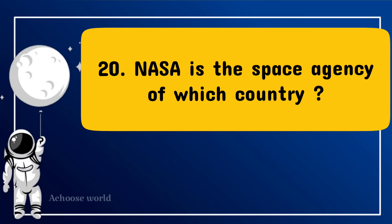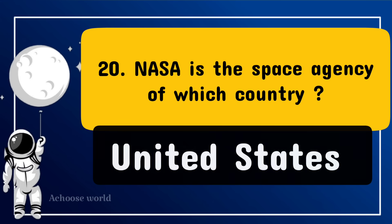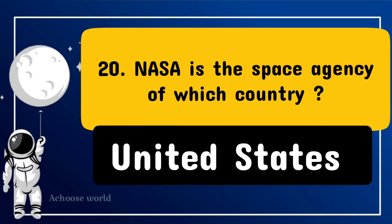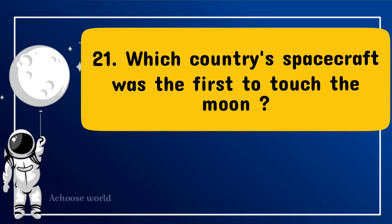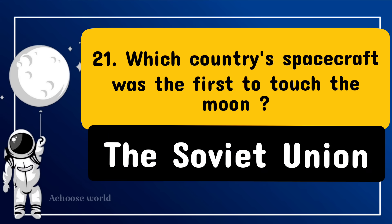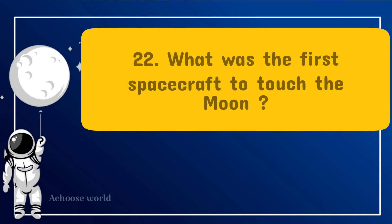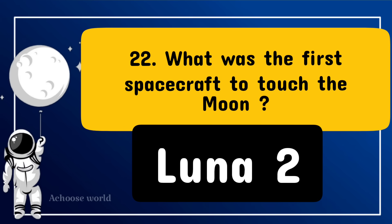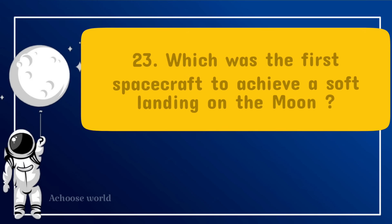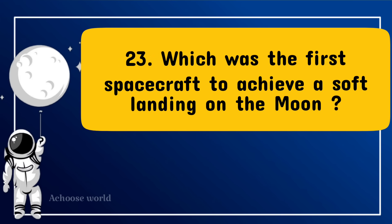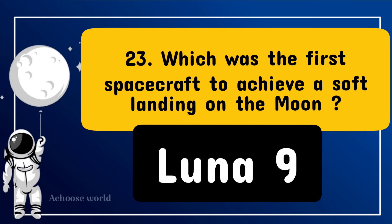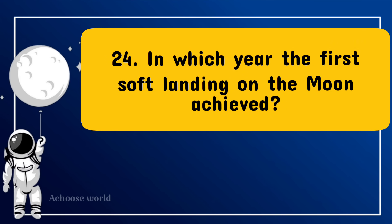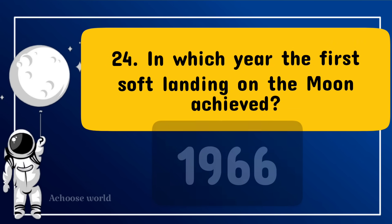NASA is the space agency of which country? United States. Which country's spacecraft was the first to touch the Moon? The Soviet Union. What was the first spacecraft to touch the Moon? Luna 2. Which was the first spacecraft to achieve a soft landing on the Moon? Luna 9. In which year was the first soft landing on the Moon achieved? 1966.